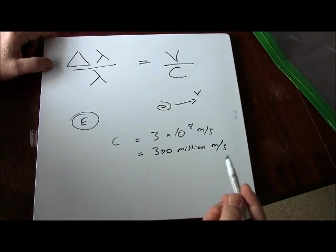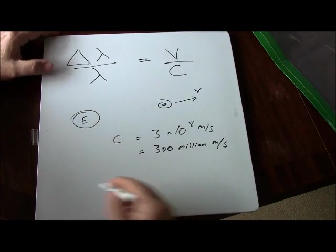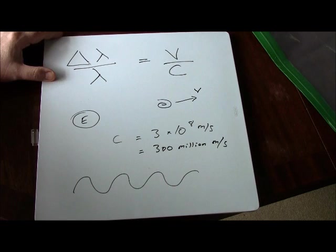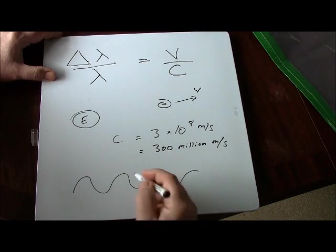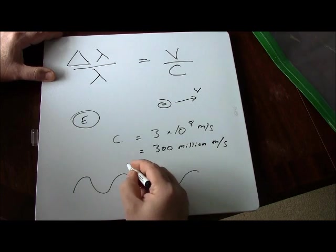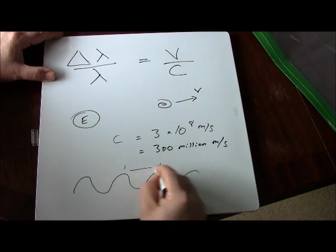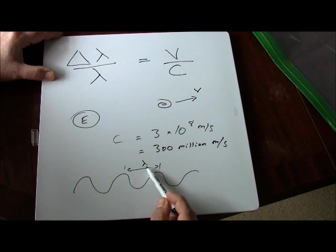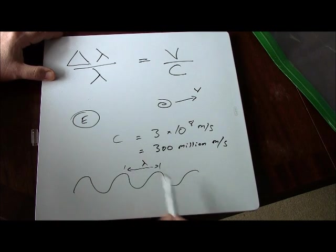Now lambda is wavelength. If this is a wave, any kind of wave—it might be light or microwaves or radio waves or whatever—then if that's a wave, then this distance from there to there is its wavelength, and we use the Greek symbol lambda to denote wavelength.